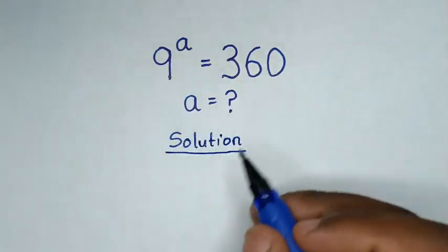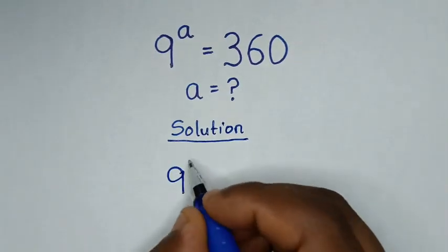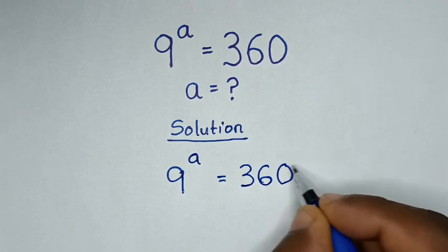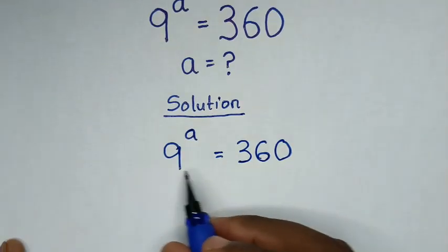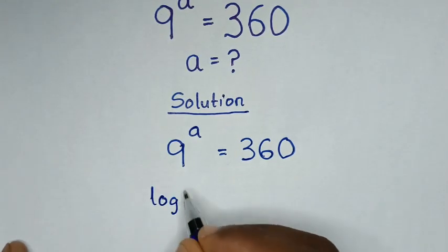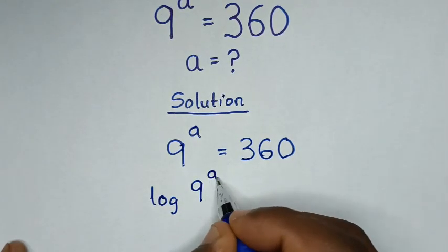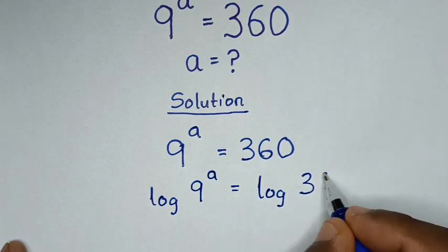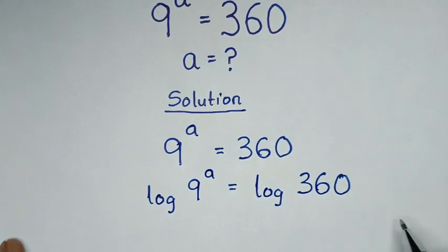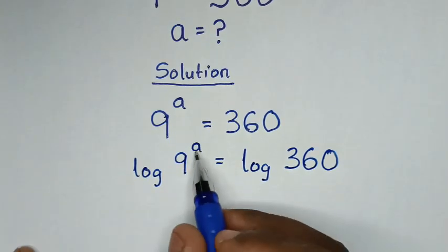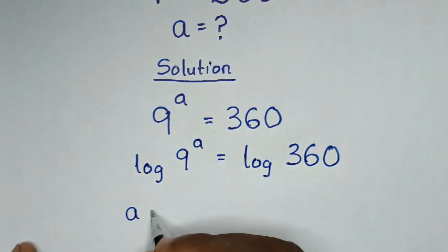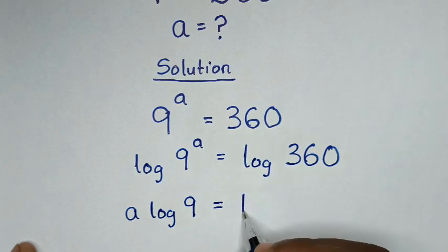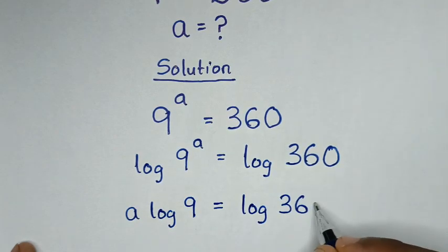From this our problem here which is 9 power of a is equal to 360. In the first step we will apply log in both sides, so it will be log of 9 power a is equal to log of 360. Then in the next step, this power of a will move to the base so it will be a log of 9 is equal to log of 360.